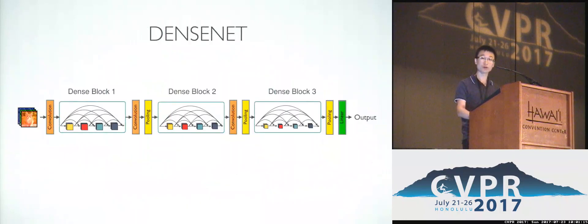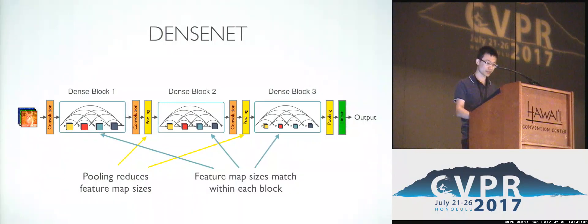Here is the full picture of a DenseNet. As in a normal ConvNet, we have pooling layers or convolution layers to perform downsampling on the feature maps, and this makes the concatenation operation unviable. To address this problem, we simply split the network into multiple dense blocks, and within each block, the feature maps have the same size so they can be easily concatenated.